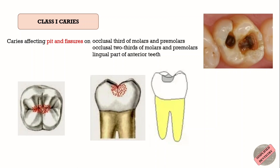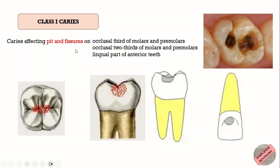Class 1 is the only pit and fissure caries, whereas the rest are smooth surface caries. It is present on the occlusal surfaces of posterior teeth, and if the pit and fissure extends down to the lingual and buccal surface of posterior teeth, it is also included in Class 1 caries.